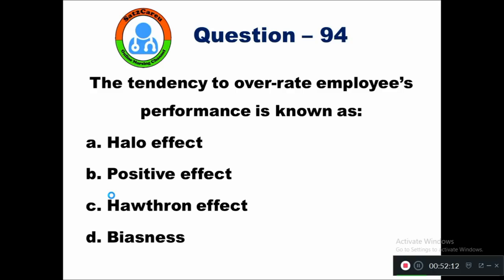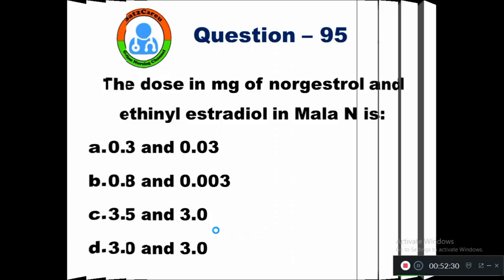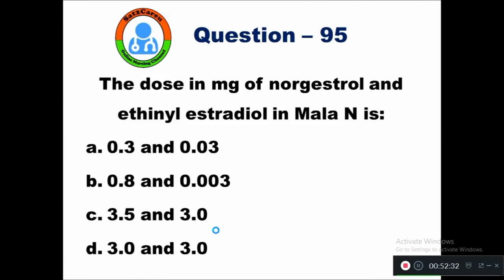Question 94: The tendency to overrate employees' performance is known as — option A halo effect, B positive effect, C Hawthorne effect, D biasness. The tendency to overrate employees' performance is known as the halo effect.